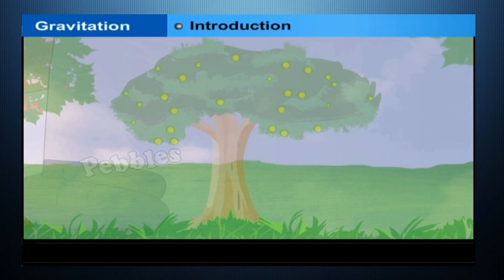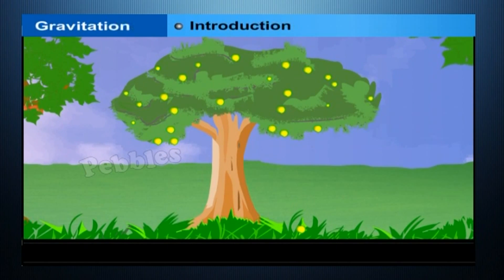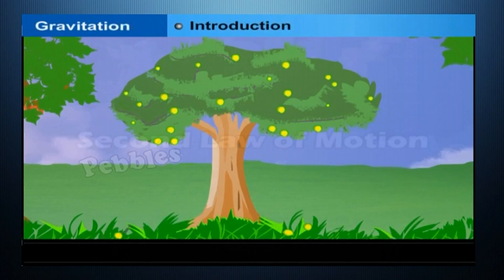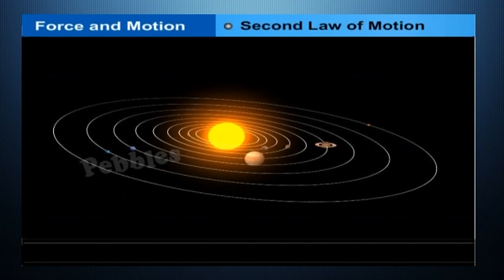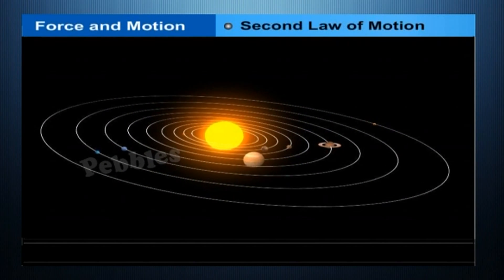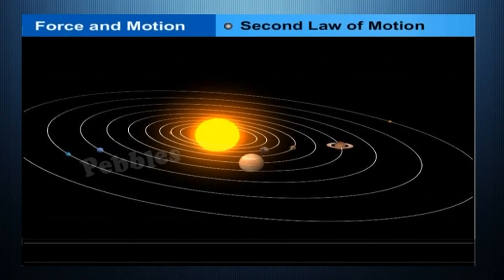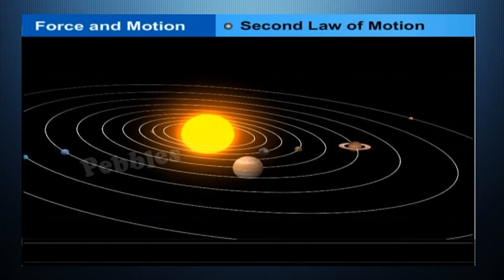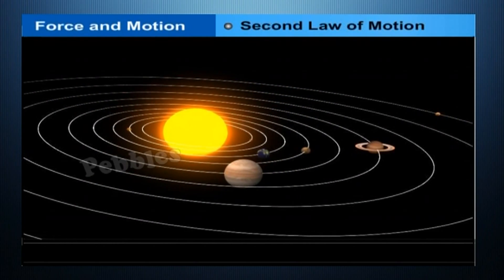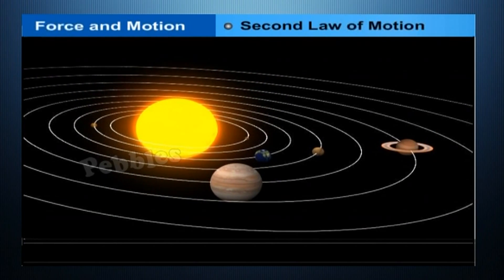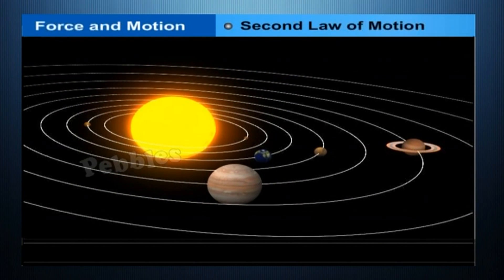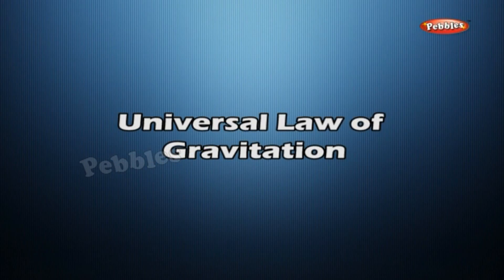We shall discuss the motion of objects under the influence of gravitational force on the earth. According to Newton's second law of motion, a force is needed to change the speed or the direction of motion of an object. We always observe that an object dropped from a height falls towards the earth, and all the planets go around the sun. Universal law of gravitation.